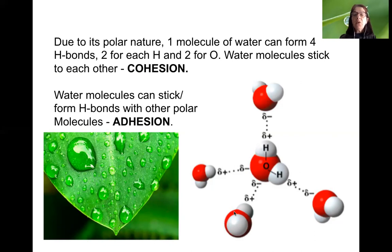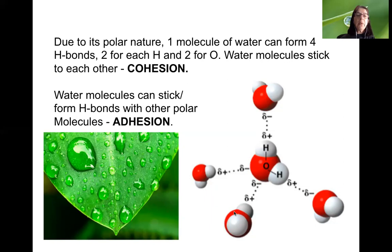Water can also form hydrogen bonds with other polar or charged molecules, and this is called adhesion. In the picture of a leaf with water droplets, what you are actually observing is both cohesion and adhesion: cohesion because the water molecules within the droplet stick to each other, and adhesion because the water molecules in the drop are also sticking to the surface of the leaf, which is made of polar molecules on the surface of the plant cells.